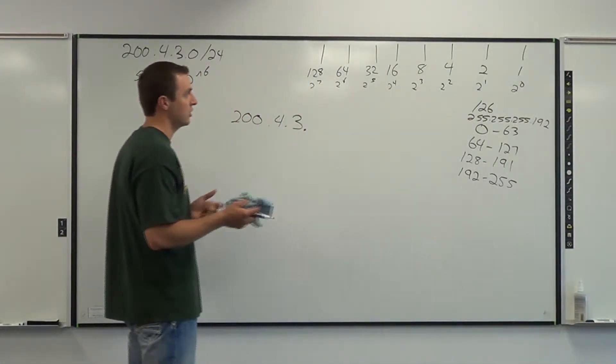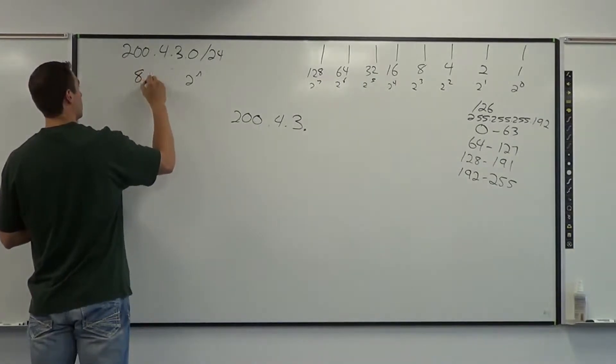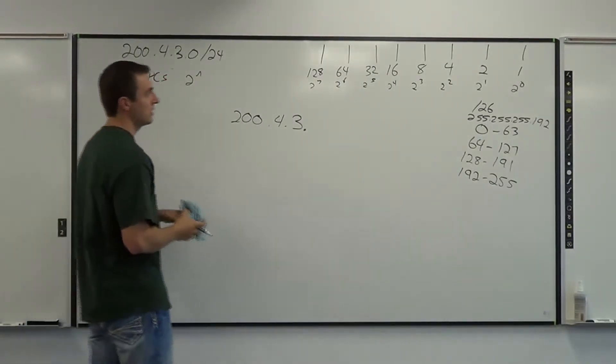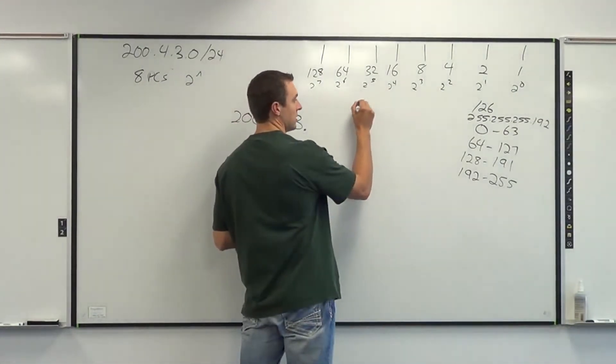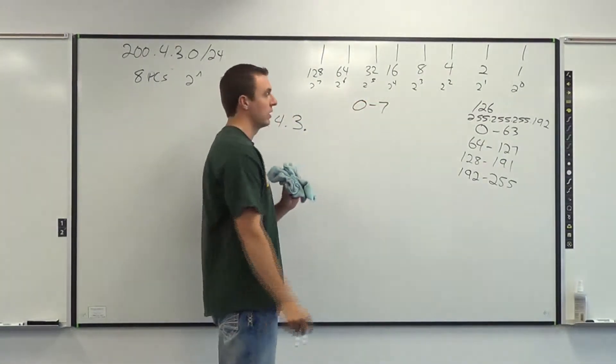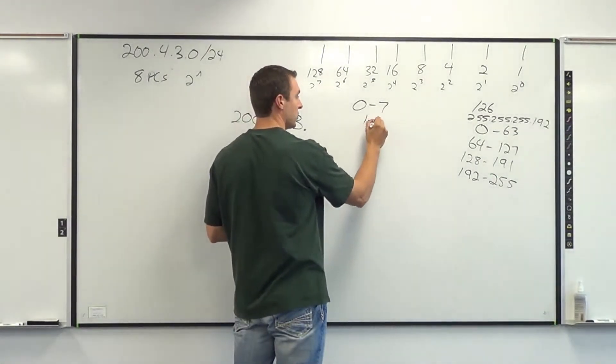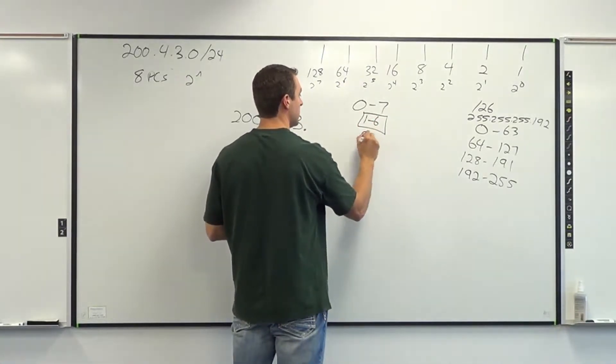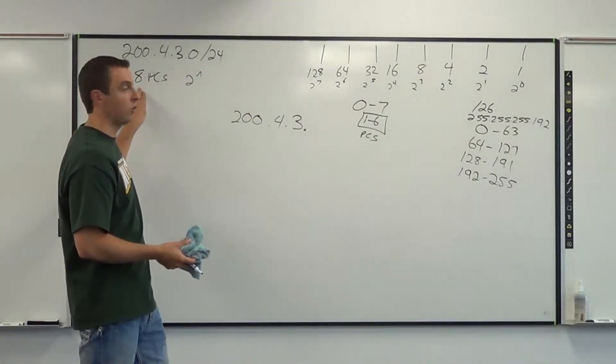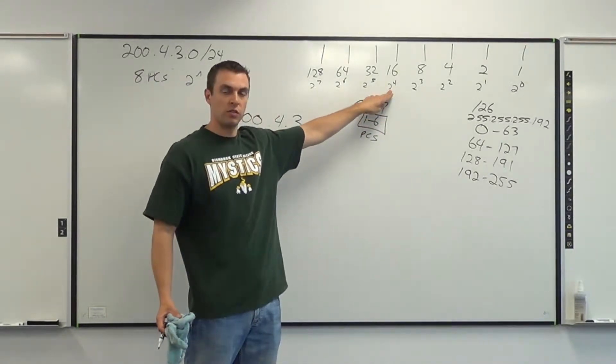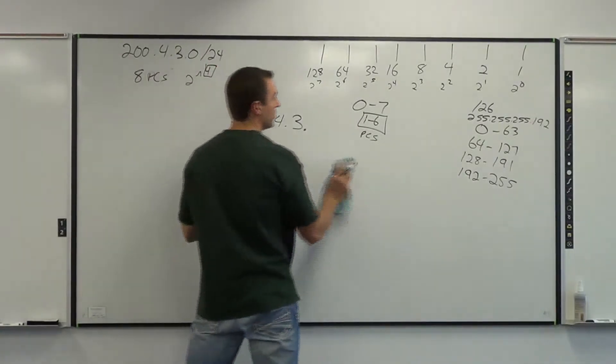So if I told you that I needed 8 PCs, I couldn't go and choose 2 to the 3rd, because 2 to the 3rd would end up giving me a range like this, 0 through 7. Yeah, it's 8 total numbers in size here, but I can only use the addresses of 1 through 6 for my PCs, which ends up leaving me short for my 8 PC requirement. So for 8 PCs, I would have to bump up and use 2 to the 4th. So if I chose 8 PCs, I'd do 2 to the 4th, 4 zeros, right-hand side.